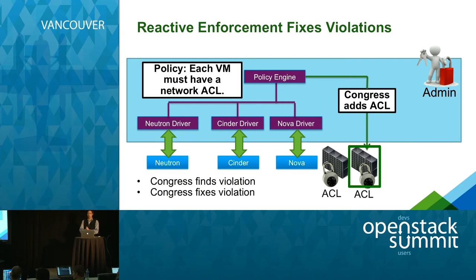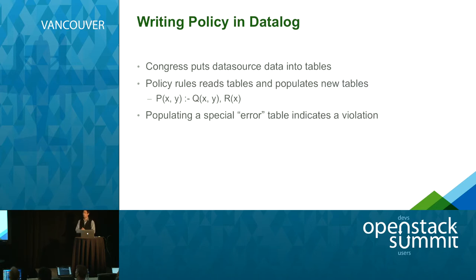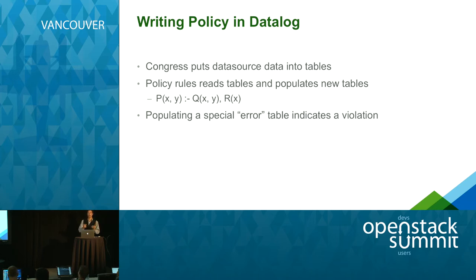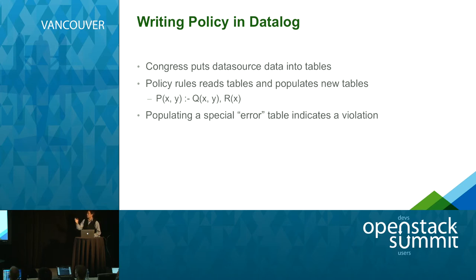At this point you might be wondering how to write policy in Congress. At a high level, we write policy in a language called Datalog. The overall idea is that there are tables coming from the data sources. Policy rules — Datalog rules — take those input tables and produce new tables. You can do this repeatedly until you reach a special table called the error table or warning table. If we populate the error or warning table given these rules, that's essentially telling Congress there is a violation.